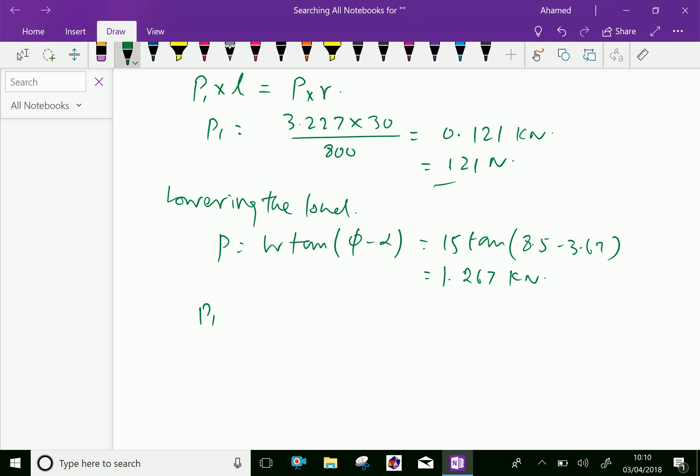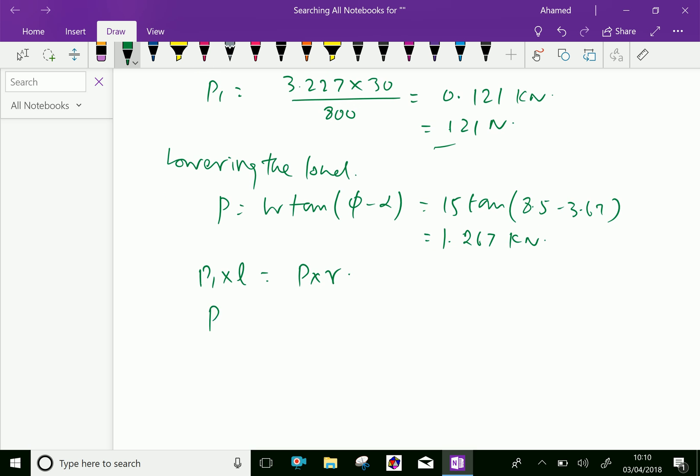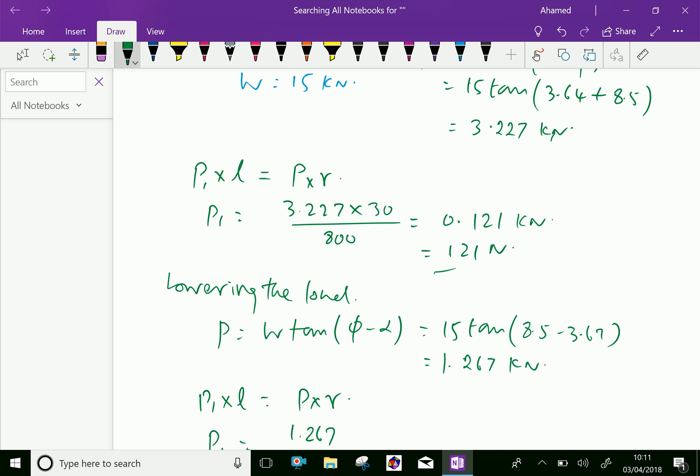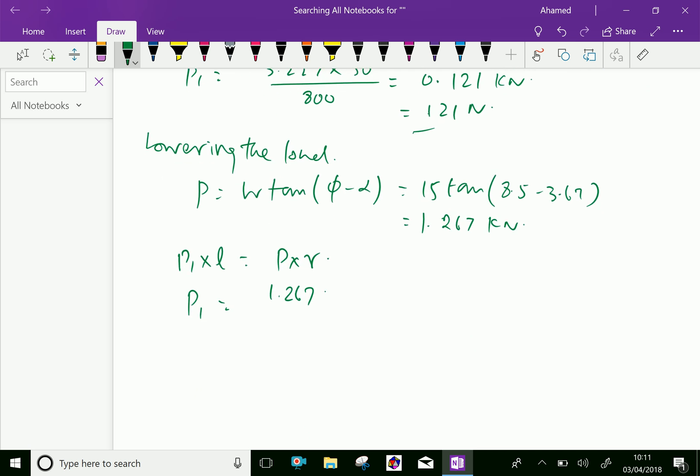Now let us apply the relation P1 into L equals P into R. The load required at the end of the handle for lowering the load equals P is 1.267 into radius is 30 over 800, which equals 0.0475 kilonewton.